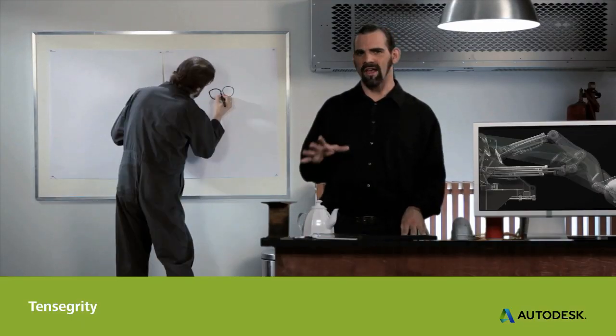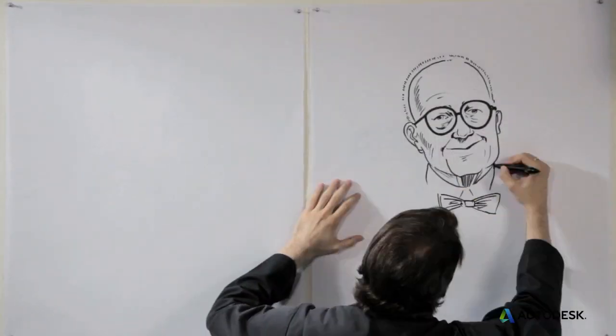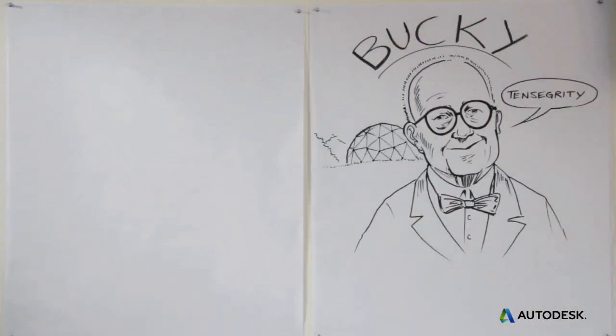Buckminster Fuller called the strategy of using tension for structural integrity tensegrity. It's great when using materials whose strength in tension is similar to their strength in compression.